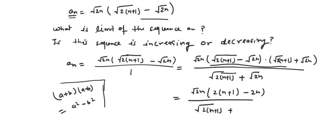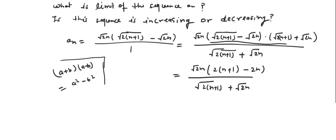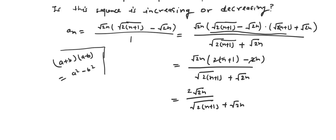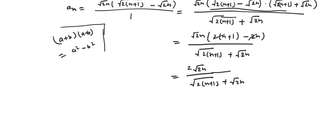We get (2n + 1 − 2n) over (√(2n+1) + √(2n)). We can cancel the 2n terms, so we are left with 1 in the numerator. After multiplying we get 2√(2n) over (√(2n+1) + √(2n)). This is our simplified form.